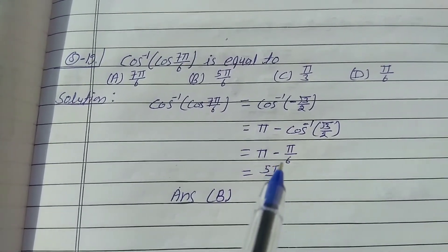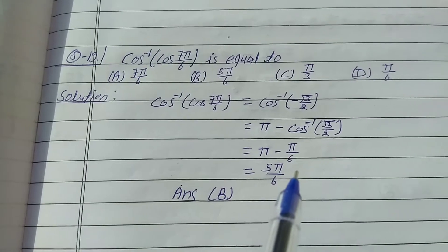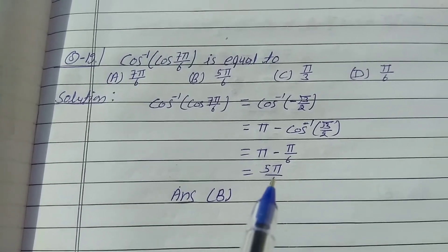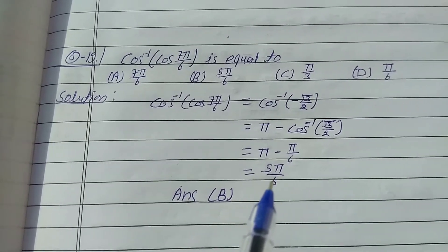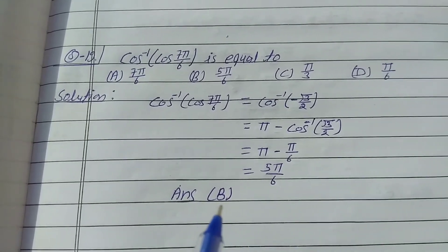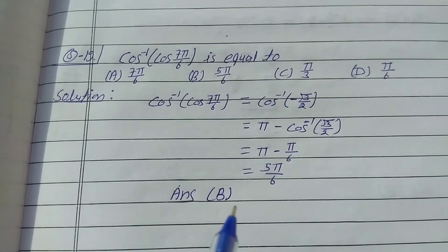So the result is π − π/6 = 5π/6. The answer is (b). That is the solution to the question.